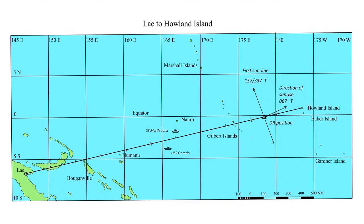First we must understand what is a sun line. A sun line is a line of position calculated after observing the time of sunrise with a chronometer. It is not a case of shooting the sun with a sextant. At sunrise, observation is difficult because the sun is rising fast and there is distortion due to refraction in the atmosphere.